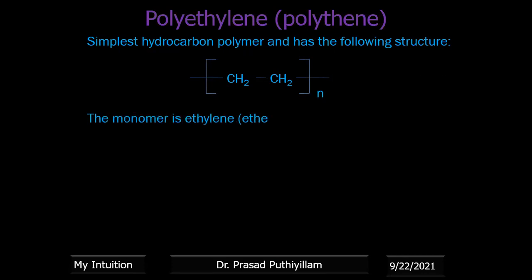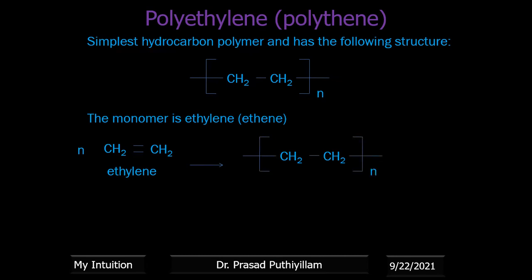The monomer is ethylene, that is CH2=CH2. When n moles of ethylene undergo polymerization, we get the corresponding polymer — polyethylene. This is how we represent the polymerization of polyethylene.